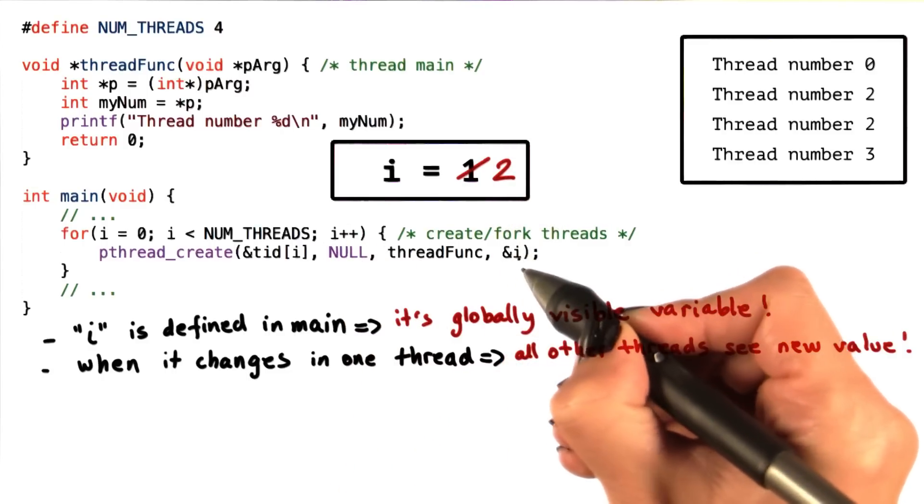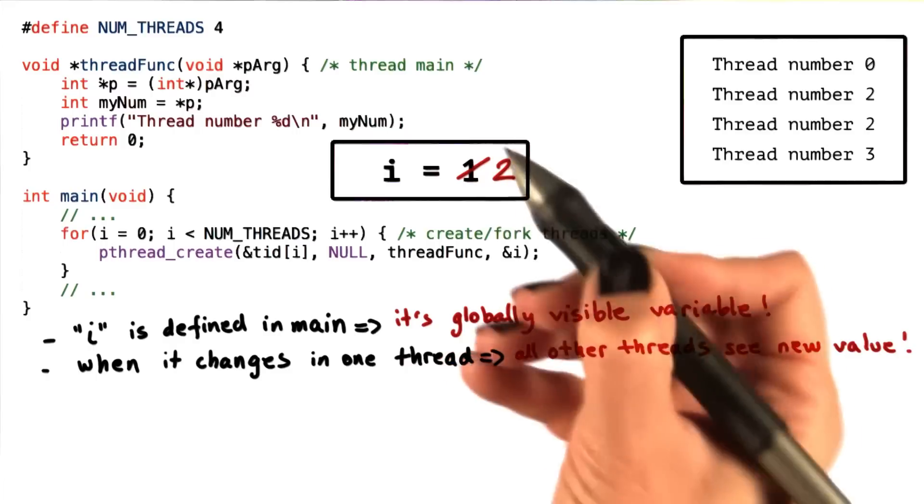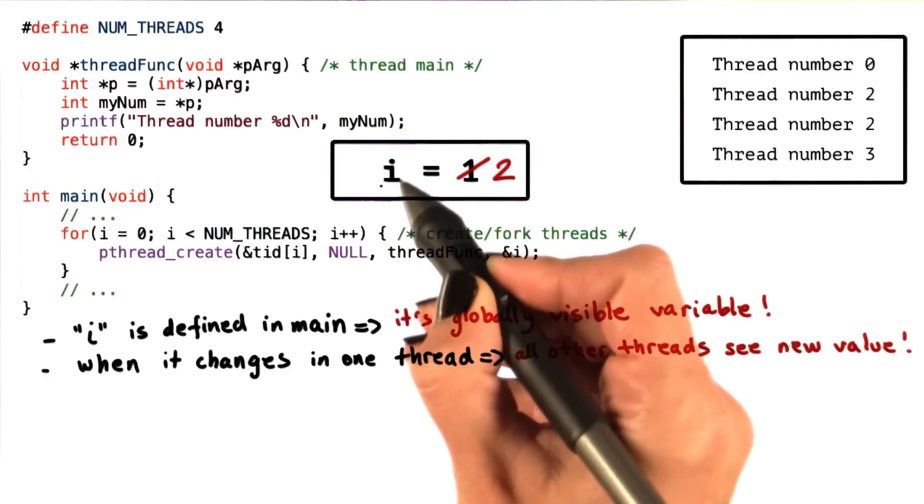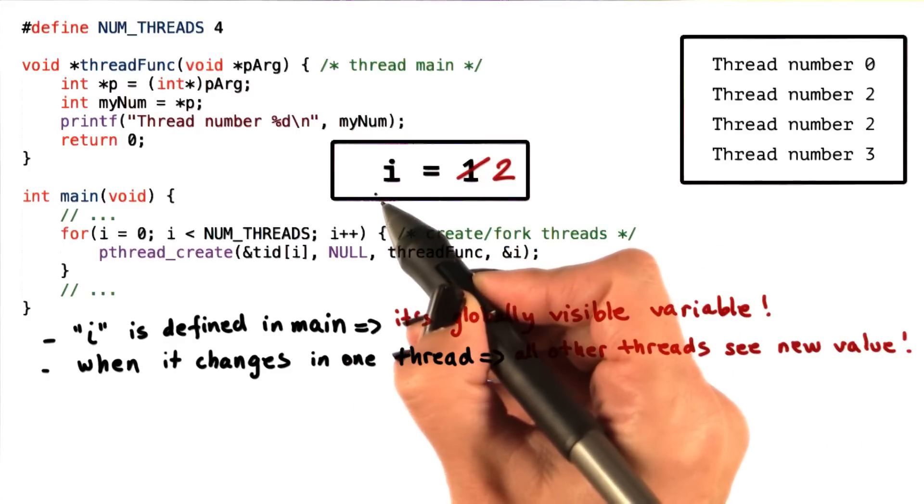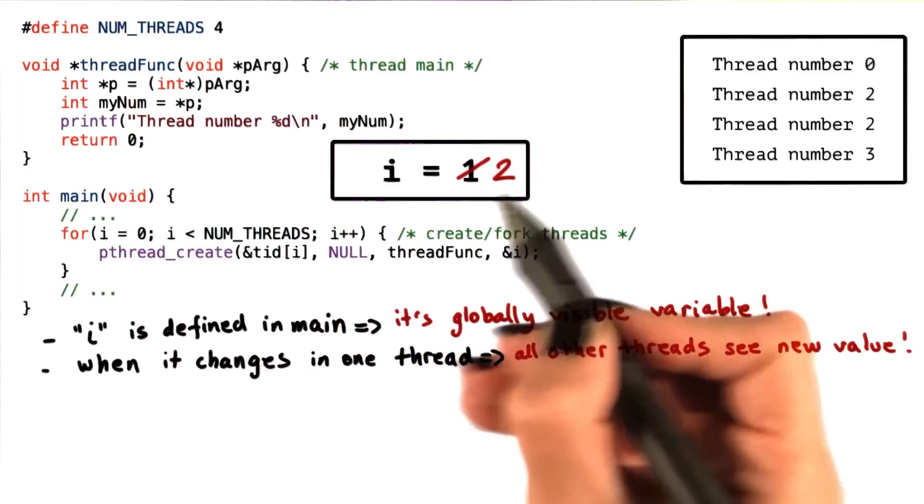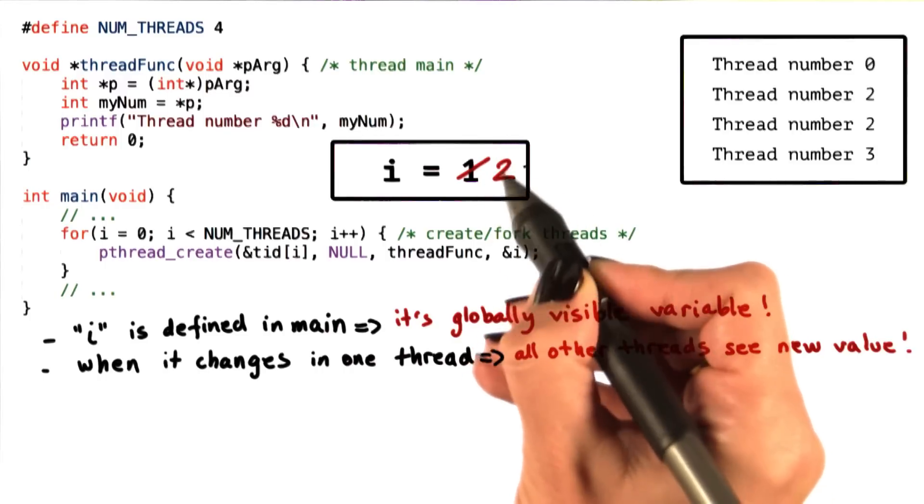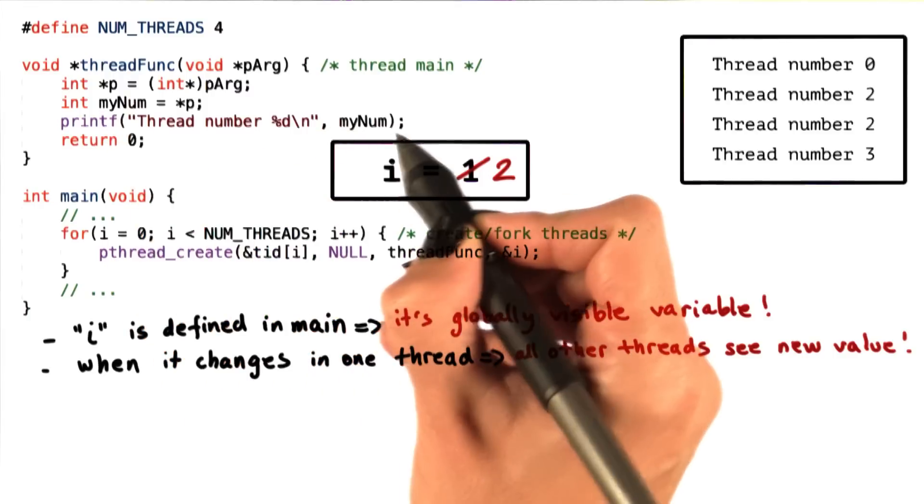Since we pass as an argument the address of i, p will also correspond to the address of i, so it will point to the same i. And then myNum will actually take as a value the new value of i, so it will take as a value 2.